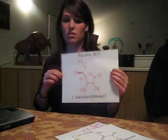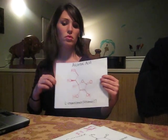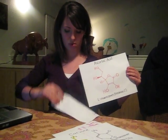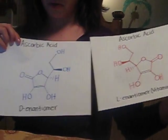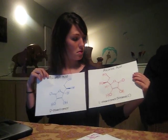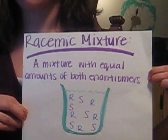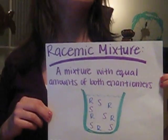Well then, what does the other enantiomer do? Actually, it does nothing. Only the L-enantiomer is beneficial to the body. If you take them in a racemic mixture, which is an equal amount of both enantiomers, your body uses the L-enantiomer and discards the D-enantiomer.